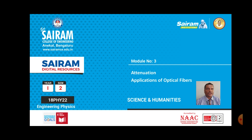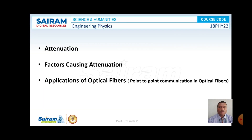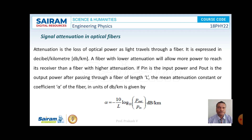The contents of this video are: attenuation, factors causing attenuation, and applications of optical fibers, that is the point-to-point communication system in optical fibers. Attenuation is nothing but the loss of power suffered by the optical signal during its propagation through an optical fiber, and it is expressed as decibel per kilometer.